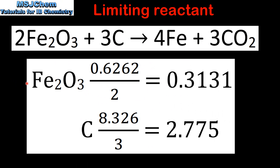In the next step we divide the amount in moles of each reactant by its coefficient in the balanced equation. For iron oxide we have 0.6262 moles and the coefficient in the balanced equation is 2, which gives us 0.3131. For carbon we have 8.326 moles and we divide that by its coefficient in the balanced equation, which is 3, and this gives us 2.775.